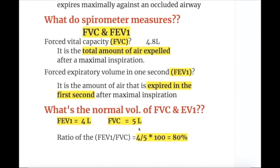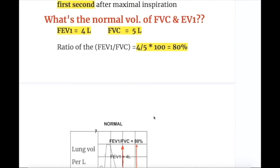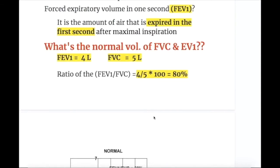What does a spirometer measure? It measures forced vital capacity (FVC) and forced expiratory volume in one second (FEV1). FVC is the total amount of air expelled after a maximal inspiration and normally it's about 4.8 liters. FEV1 is the amount of air that is expired in the first second after maximal inspiration. The normal volume of FEV1 is 4 liters and FVC is 5 liters.